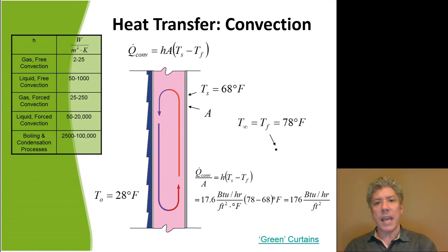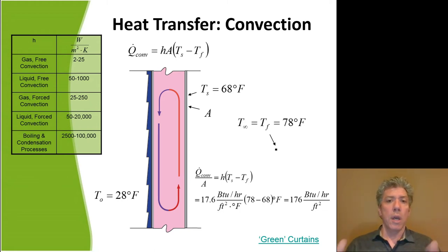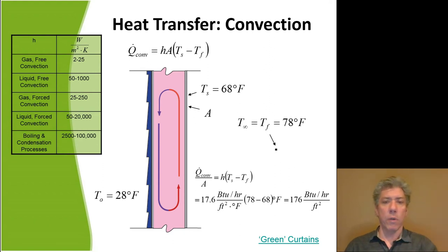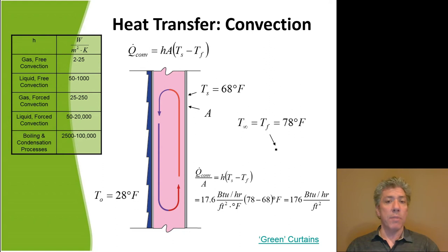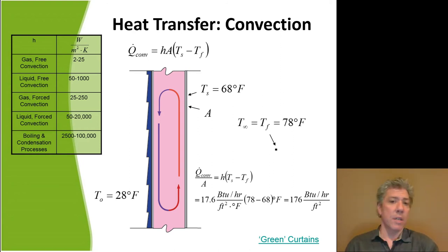If you have horizontal pipes with air flowing around them, there would be a correlation equation from a lot of experiments on many different sizes of pipe and fluids. You'd go to that correlation, put in the geometry and material properties of the solid and the fluid flowing around the pipes to get what's called the Nusselt number — a dimensionless number inside which is the convective heat transfer coefficient H, and you can solve for it. We're not going to do that in this class.